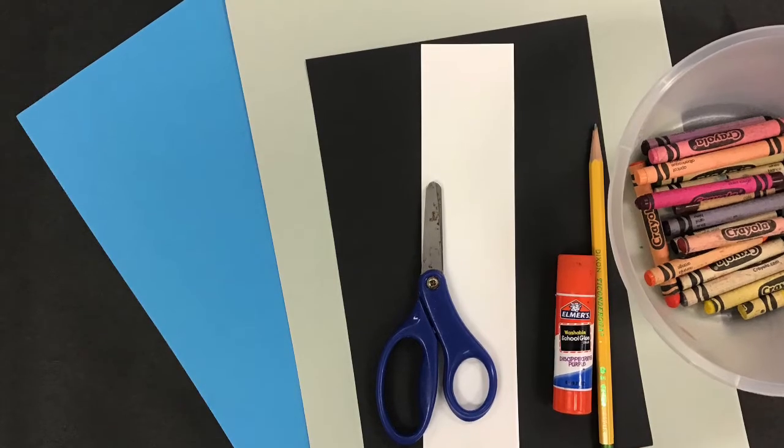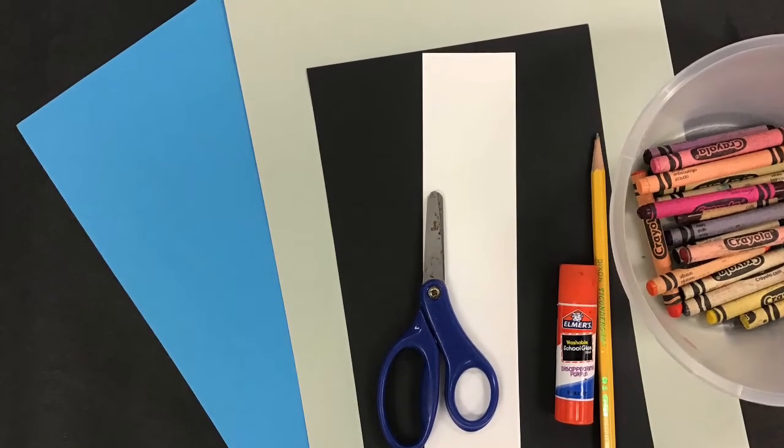Shark Symmetry Collage Part 1. For this project, you need a blue paper, a gray paper, a small black paper, a strip of white paper, scissors, glue stick, pencil, and crayons.